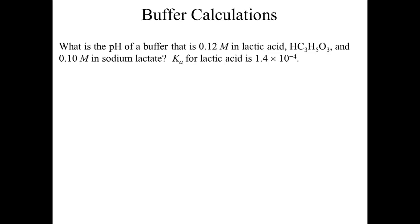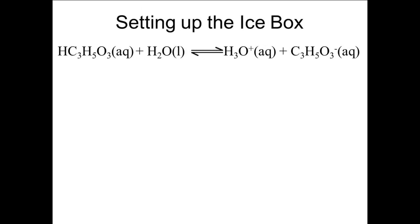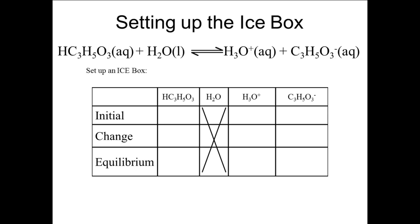This is an equilibrium problem, so let's set up the ICE box. We begin with the equilibrium reaction: HC3H5O3 plus H2O in equilibrium with H3O+ and C3H5O3-. The water column can be included and ignored, since the concentration of water will not change, or not included in the ICE box since it is not in the equilibrium expression. The initial concentration of the weak acid is given as 0.12 molar. The initial concentration of H3O+ is zero, since we did not start with any of it.